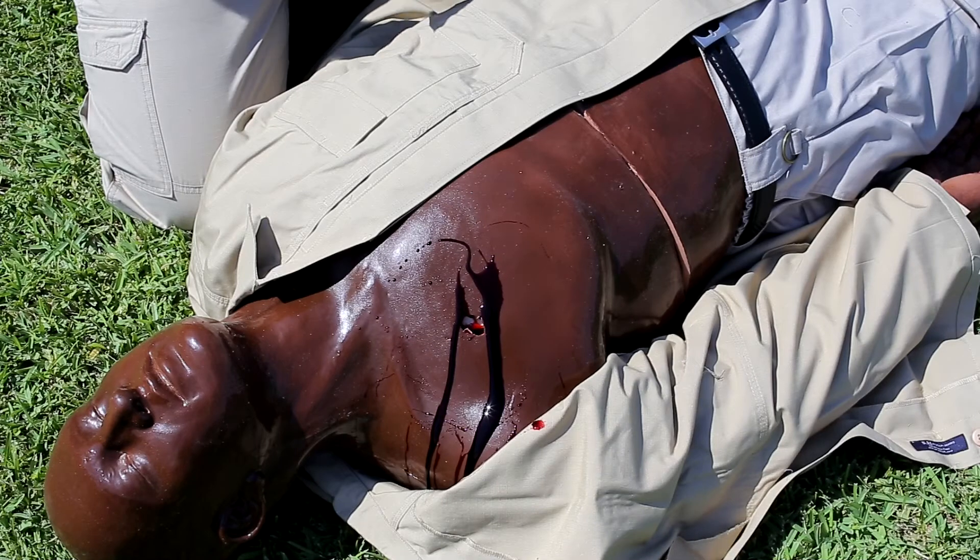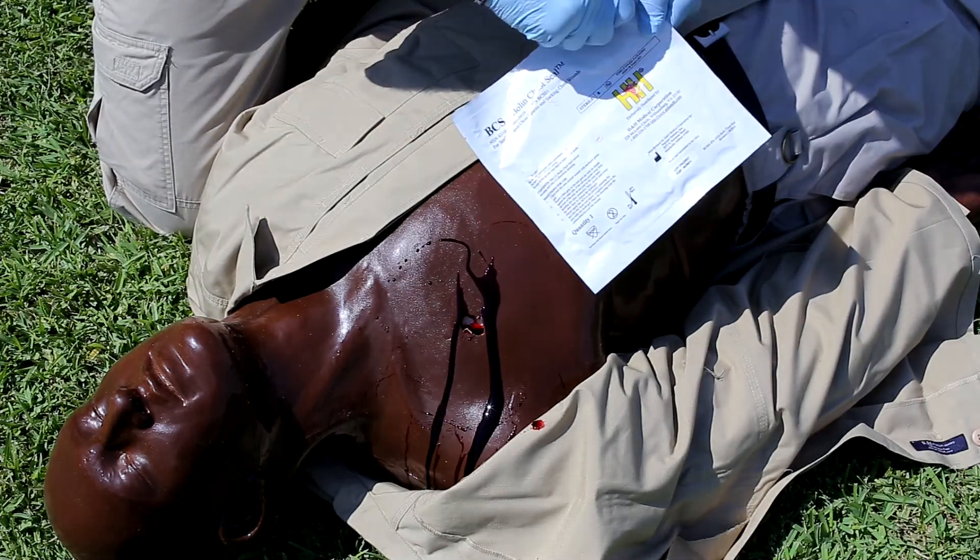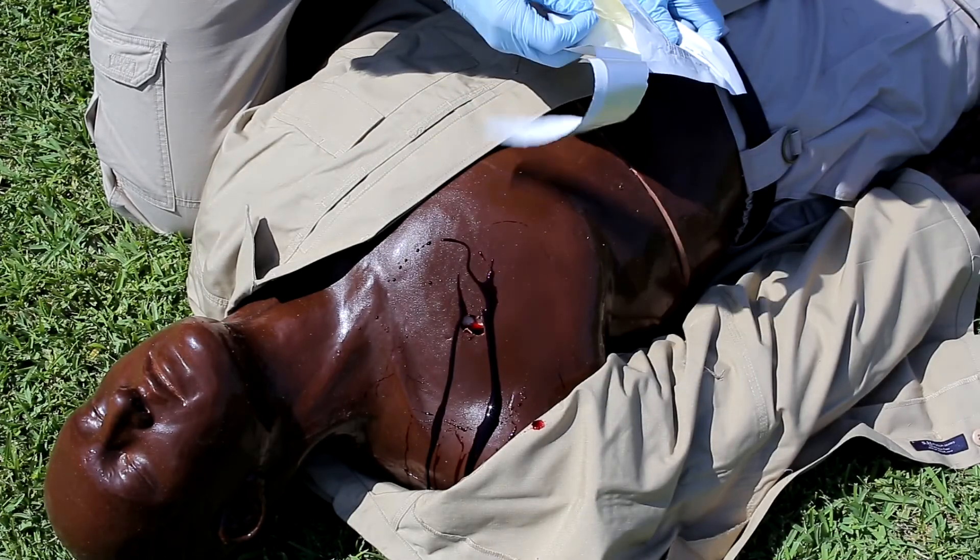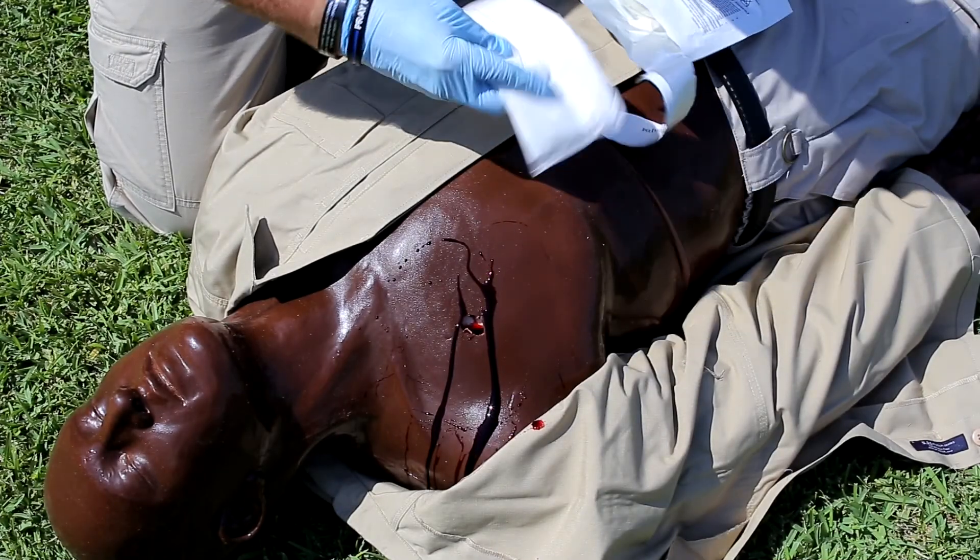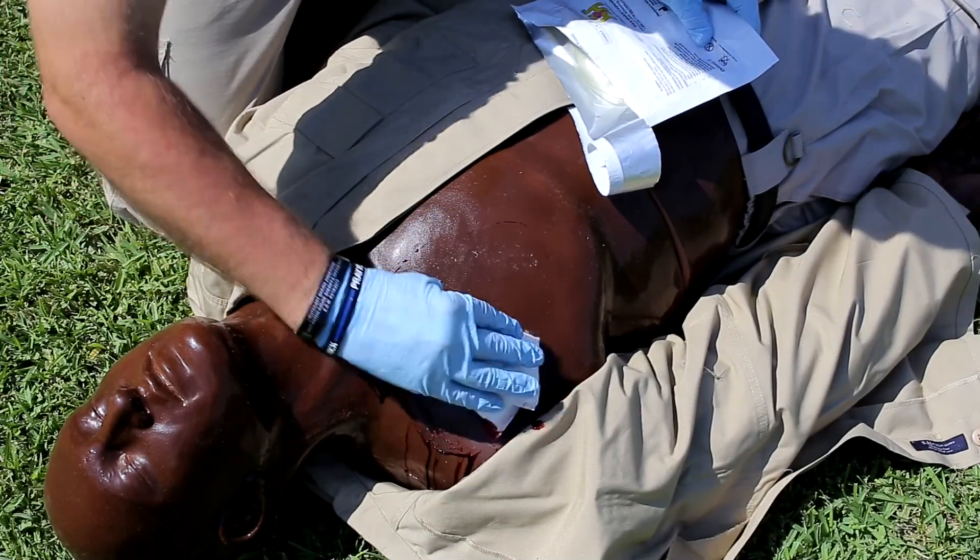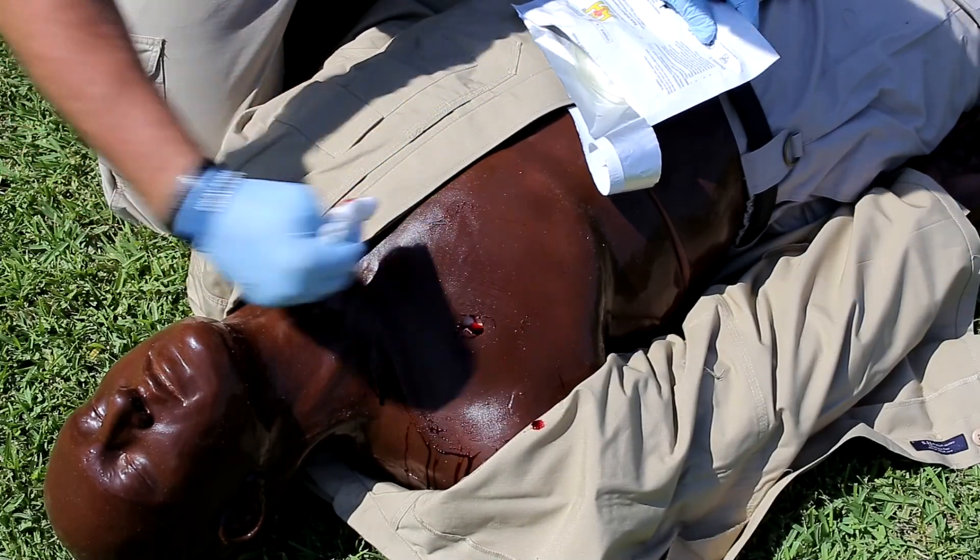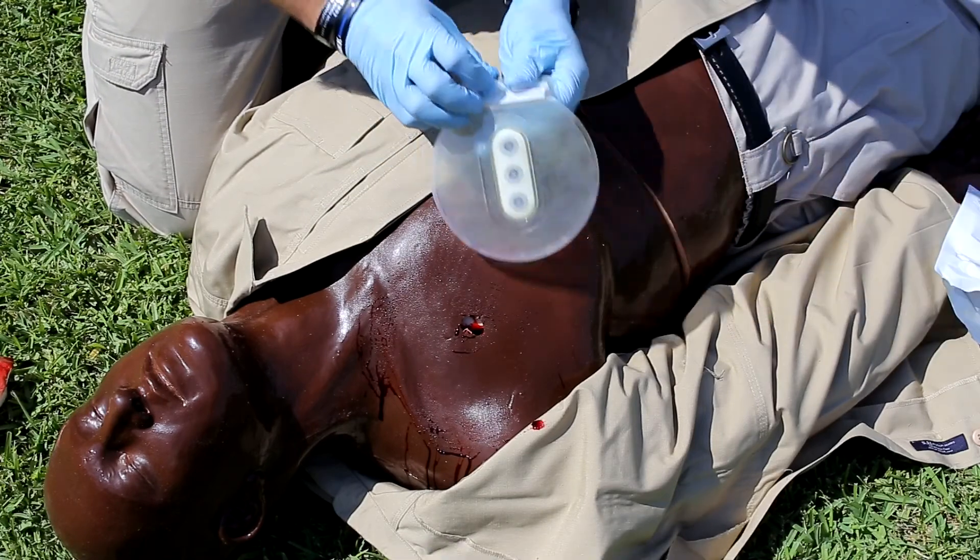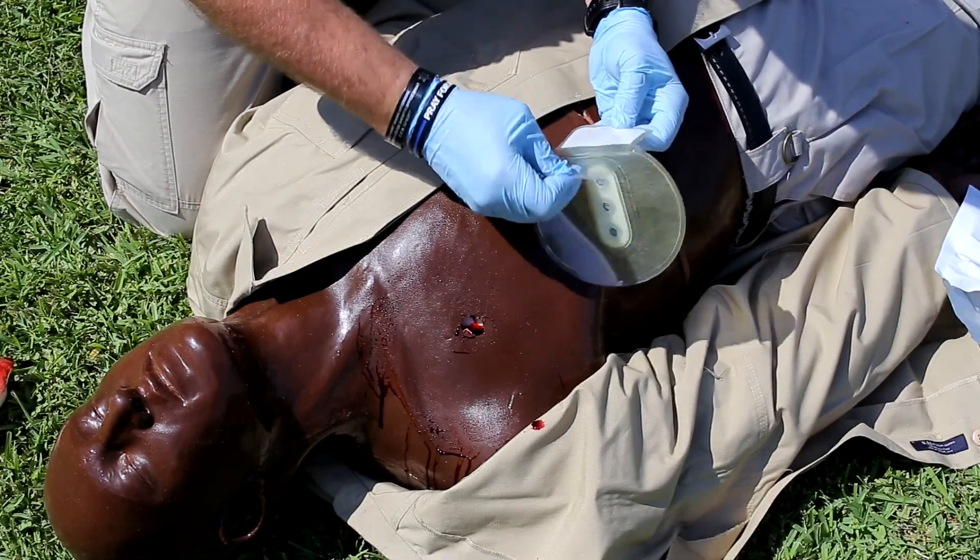Expose the patient's torso and locate the chest defect. Using the included gauze, clean the wound site thoroughly and immediately apply the Bolin chest seal, centering the valves over the wound. The BCS will best adhere to a clean, dry surface, so proper preparation of the wound site is critical to establishing the best possible seal. Fully inspect the remainder of the patient's torso to locate any additional wounds.